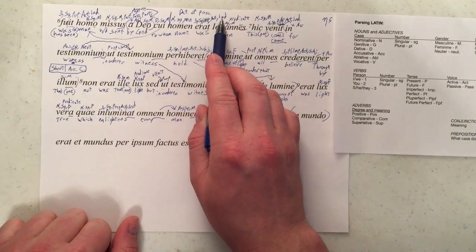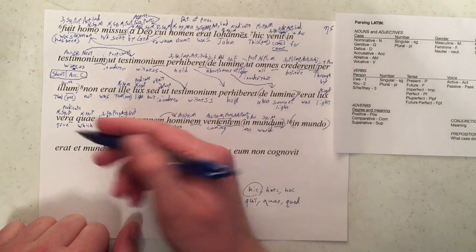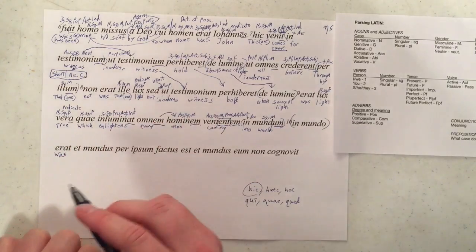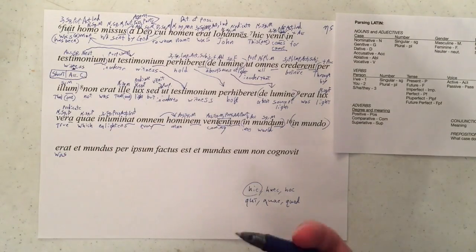It's third person, singular, imperfect, active, and indicative, and it just means was. So we're going to just write that in there. We know we want a singular subject for this.